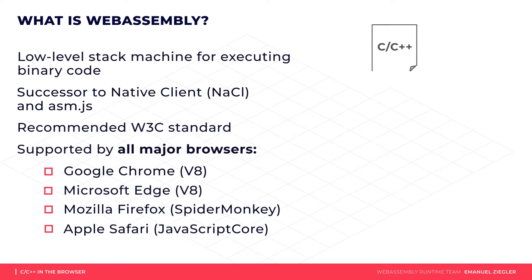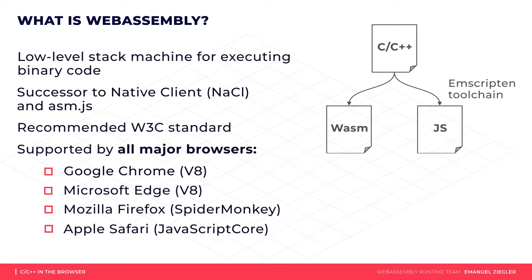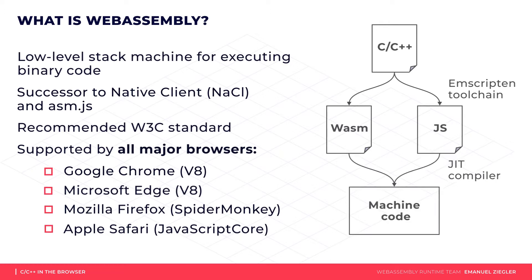Emscripten works as an easy drop-in replacement for your compiler toolchain. It usually creates two files: one containing the WebAssembly binary and the other containing JavaScript code that makes it more convenient to work with. The browser engine will then usually transform both modules into machine code using a just-in-time compiler.